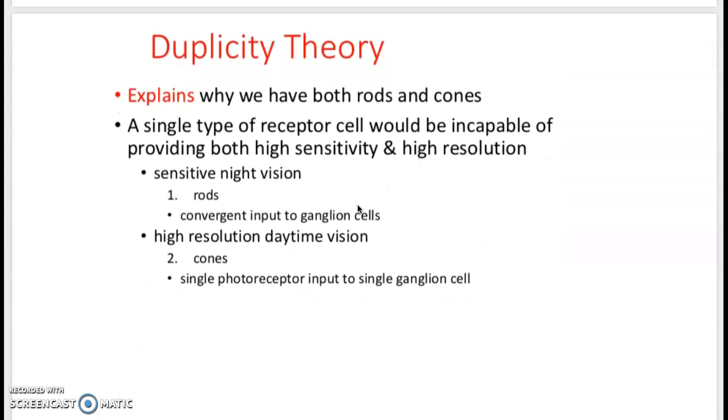So duplicity theory, I don't care that you know all the specifics, but just understand that we need to have rods and cones in order to have night vision and daytime vision. It would be impossible for one type of receptor to give us high sensitivity, ability to see at night, and high resolution, high quality of the image. So we have both rods and cones to do this.